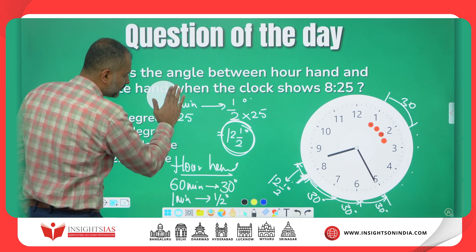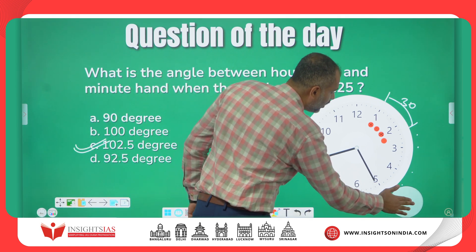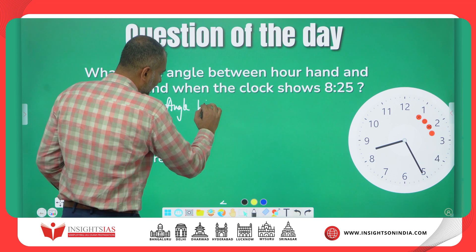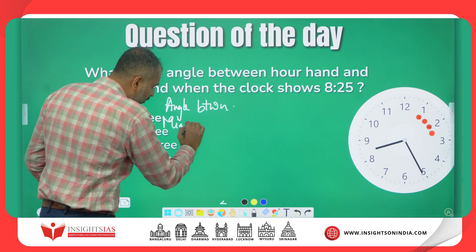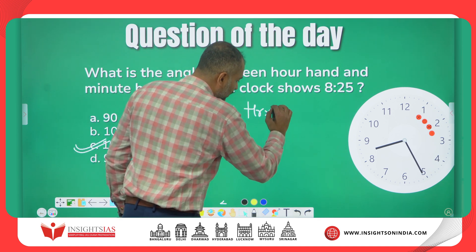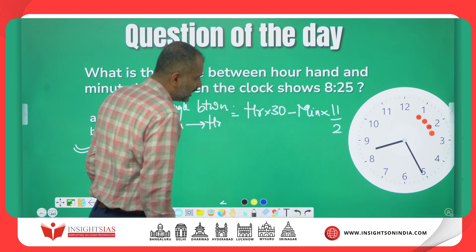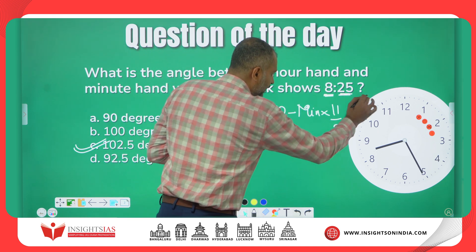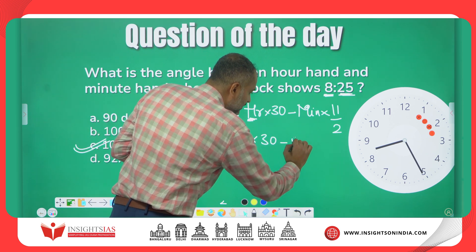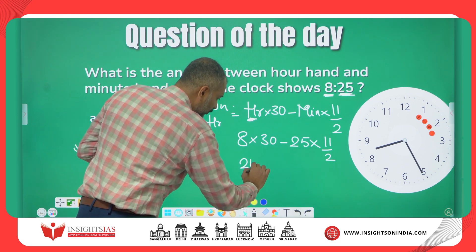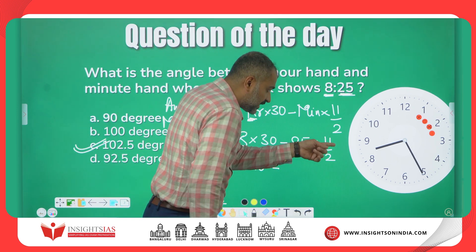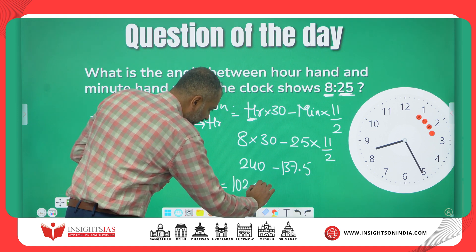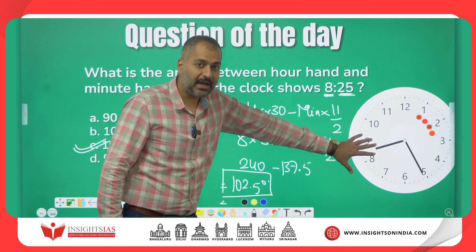This question can also be solved using a small formula: the angle between the minute hand and hour hand equals H×30 minus M×(11/2). For this problem, H is 8 and minutes is 25. So: 8×30 minus 25×(11/2) = 240 minus 137.5 = 102.5 degrees. If you don't know the concept behind the calculation, you can just use this formula directly.